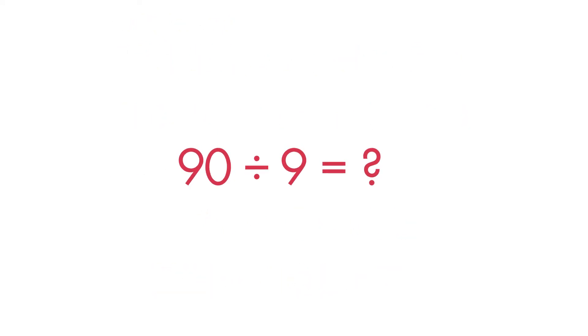We can use basic facts to help us divide by multiples of 10 and 100. Look for a basic fact you know in the division equation. We know 9 divided by 9 is equal to 1.